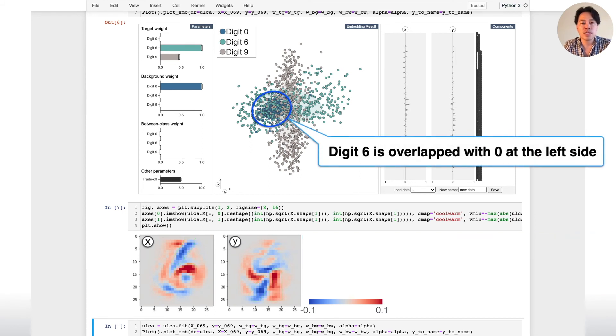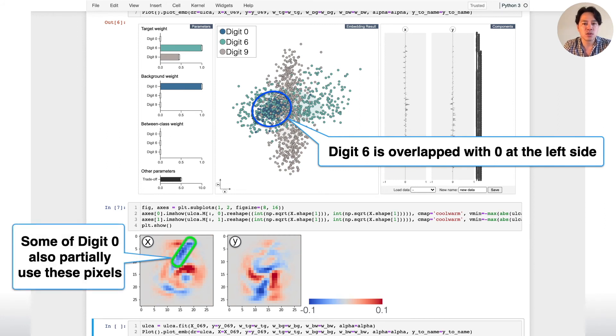But, from the embedding result, we notice that digit 6 has many overlaps with digit 0 at the left side. We can expect this is caused by the fact that some of digit 0 partially use these highlighted pixels.